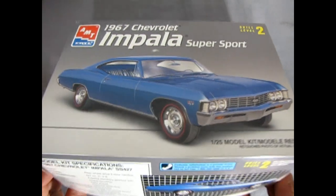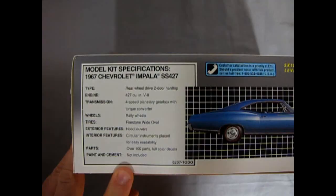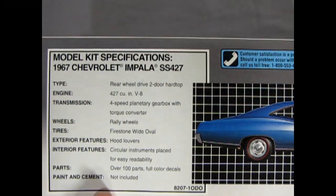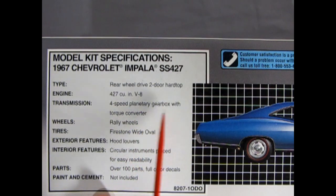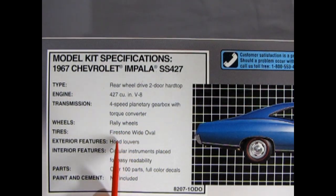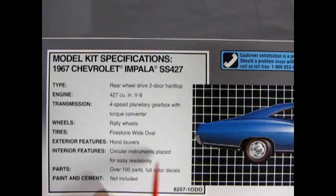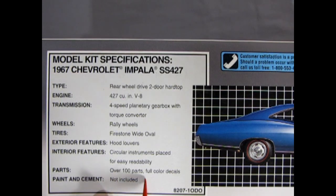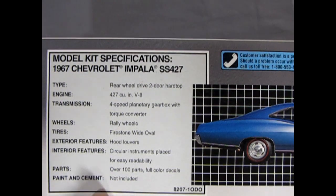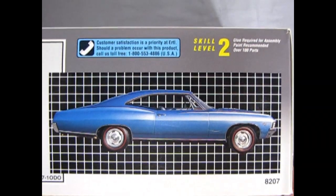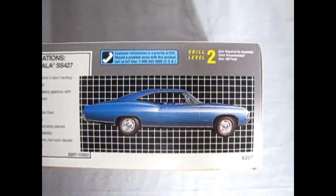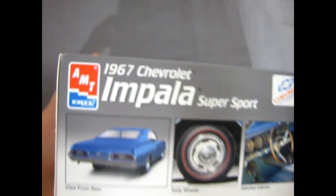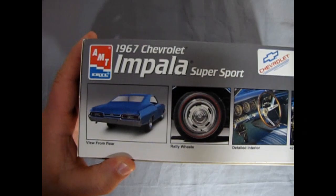So let's take a look at the side of the box here. We get quite a bit of detail going on in the explanation. We get a rear-wheel drive two-door hardtop with a 427 cubic inch engine, four-speed planetary gearbox with a torque converter, rally wheels, Firestone wide ovals, hood louvers, circular instruments placed for easy readability, over 100 parts, full-color decals, paint and cement is of course not included. And here we've got a picture of the real car on the side of the box. Should you need any assistance, there's the old number for customer service. I don't know if it's gonna help you anymore. Since AMT is now part of round two, there's the side of the box.